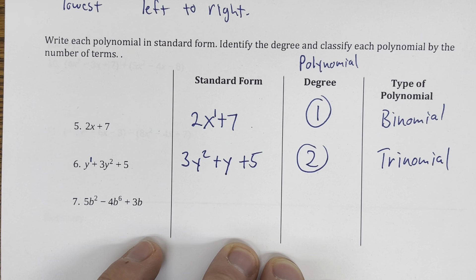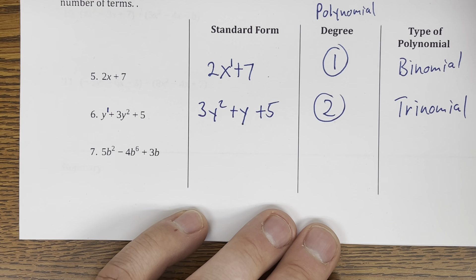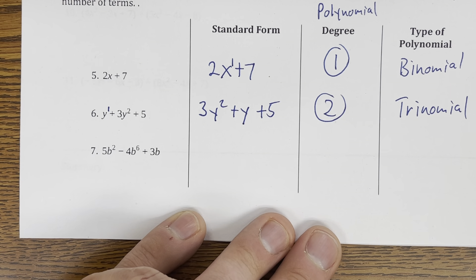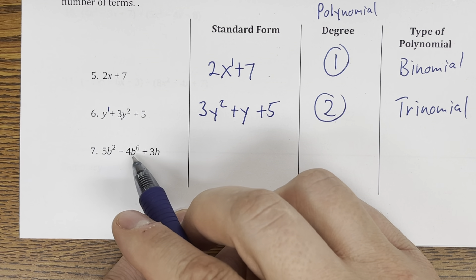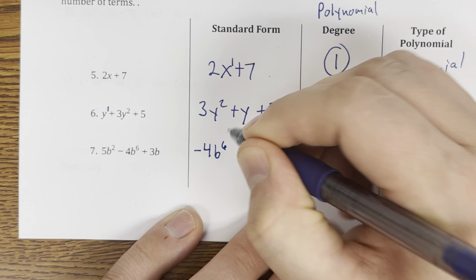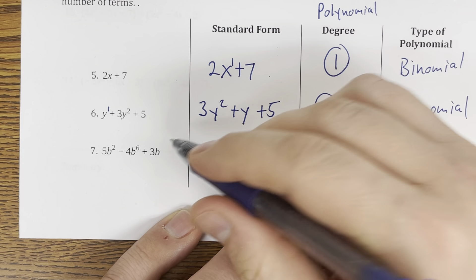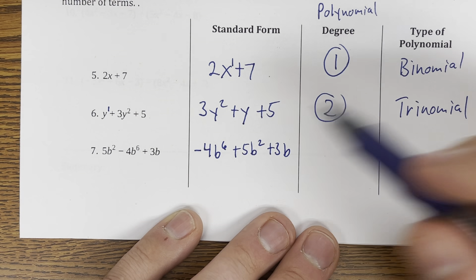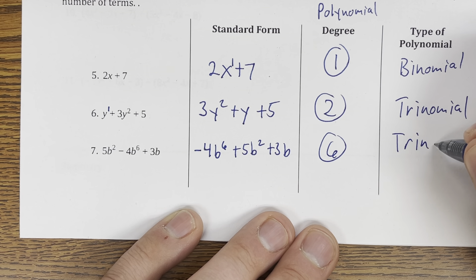We don't call a four-term polynomial a quadomial — we just go with monomial, binomial, and trinomial; that's all we classify by type. For the next example, the highest degree appears to be b to the sixth — it's negative, so it stays negative. Then we have plus 5b squared, and then plus 3b. Now it's in descending order: the highest degree is 6, it has 3 terms, so it is a trinomial.